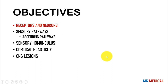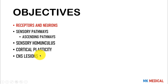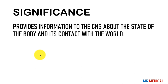Over the course of the next review lecture videos in neurophysiology, we're going to be looking at receptors and neurons, the sensory pathways — predominantly the ascending pathways, which are the sensory neurons — the sensory homunculus, the phenomenon of cortical plasticity, and we'll eventually end with CNS lesions. The whole significance of this somatosensory system is that it's going to be providing information to the central nervous system about the state of the body and its contact with the world.